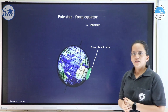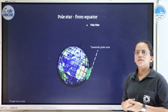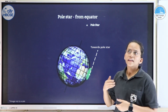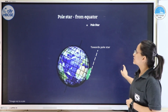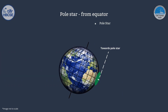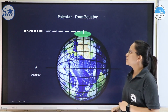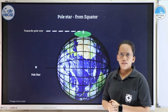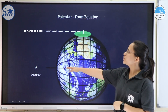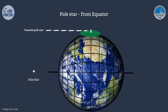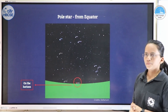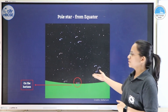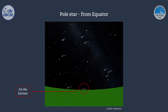Now let's go to the equator. How will a person standing on the equator see the pole star? The earth is tilted at 23.5 degrees and our observer is standing at the equator. From the observer's perspective, the pole star is going to be on the horizon, and that point will be the north direction for that person. So the pole star will appear just at the horizon.